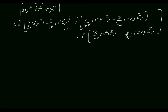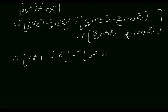Now we will differentiate. For the i vector term, first we differentiate with respect to y — x squared e power z is a constant, so the differential of y is 1. In the second term, we differentiate with respect to z — x squared is a constant, and the differential of e power z is e power z. Minus j vector into dou by dou x of x squared y e power z: differentiating with respect to x, y e power z is a constant, so the differential of x squared is 2x. Then differentiating with respect to z, 2xy is a constant, and the differential of e power z is e power z.